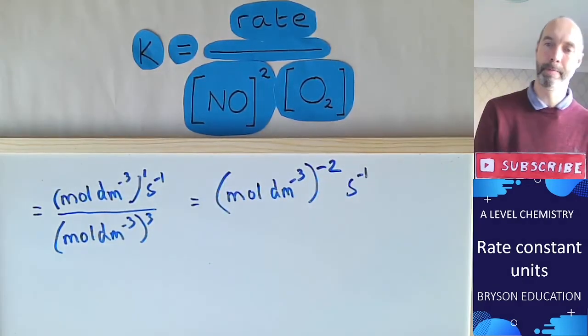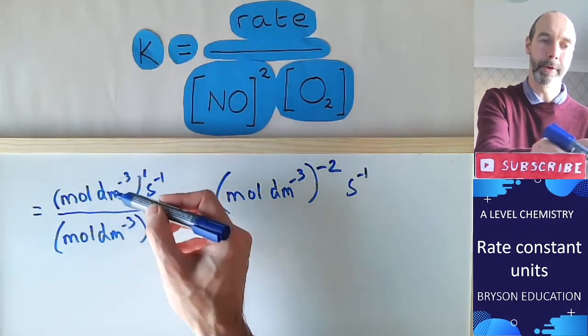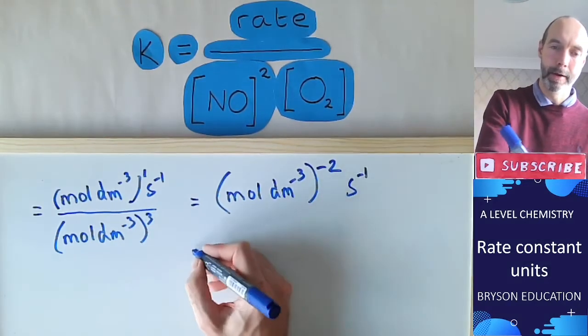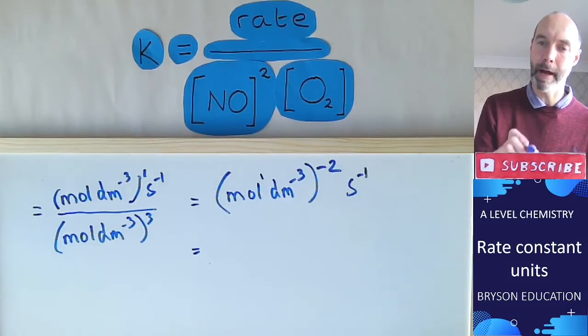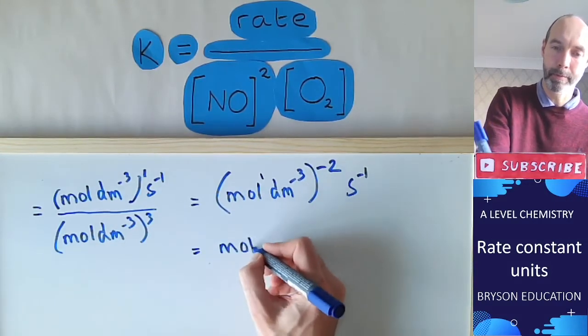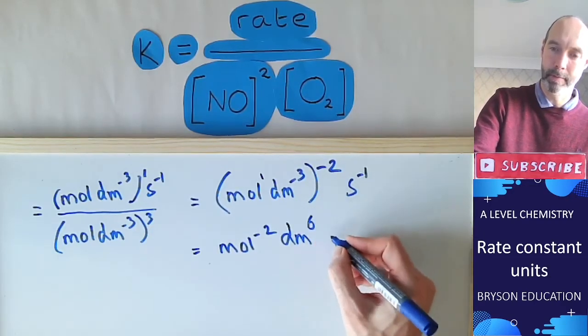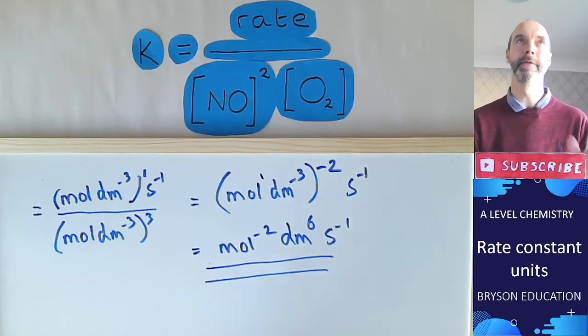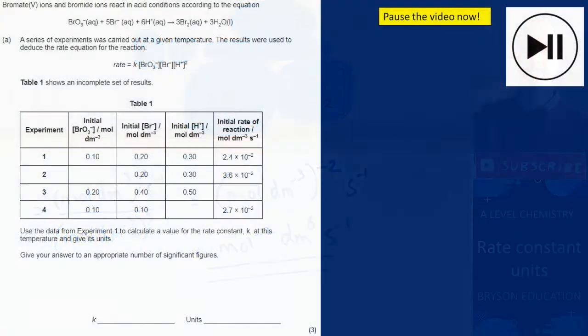And seconds to the minus one. All I've done is lift this bottom up to the top: one minus three is minus two. Now to tidy up, I'm going to multiply through. One multiplied by minus two is minus two. Minus three times minus two is six. Those are the units in this case for the rate constant in this equation.